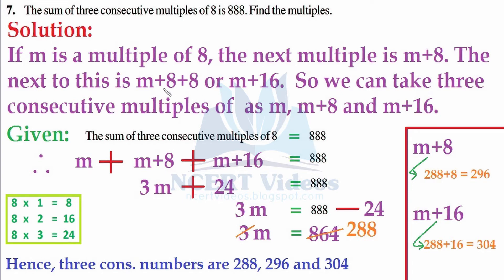The next to this is m plus 8 plus 8, or in short term when you add 8 plus 8 it is 16. Therefore, if the initial multiple was 8, another would be 16 because 8 plus 8 is 16, and the next one would be 8 plus 16 or 8 plus 8 plus 8, that will give you 24. So we can take three consecutive multiples of 8 as m, m plus 8, and m plus 16.